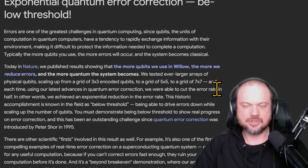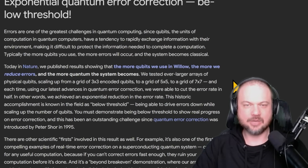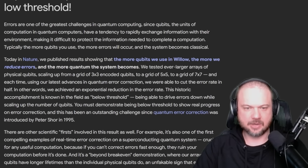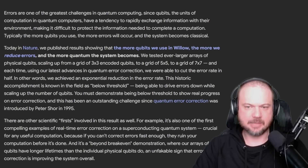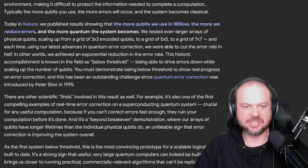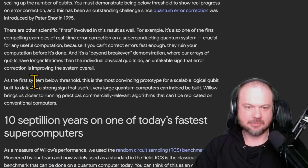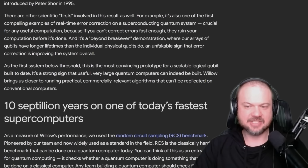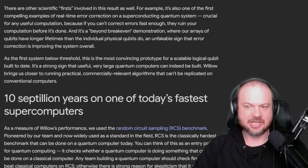Today in Nature, Google published results showing that the more qubits we use in Willow, the more we reduce errors and the more quantum the system becomes. This historic accomplishment — being able to drive errors down while scaling up the number of qubits — is known in the field as below threshold. As the first system below threshold, this is the most convincing prototype for a scalable logical qubit built to date.